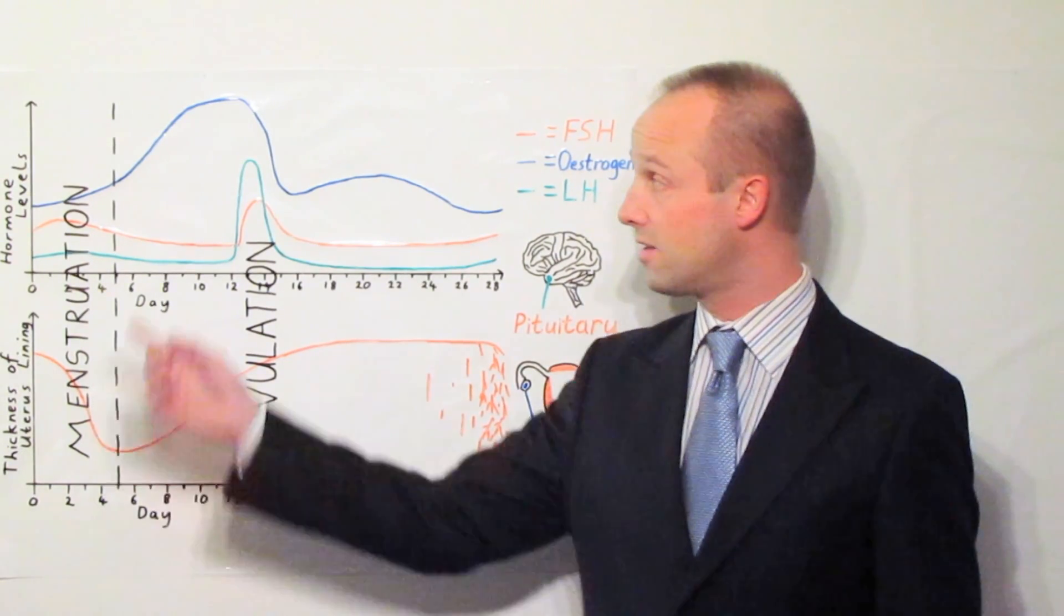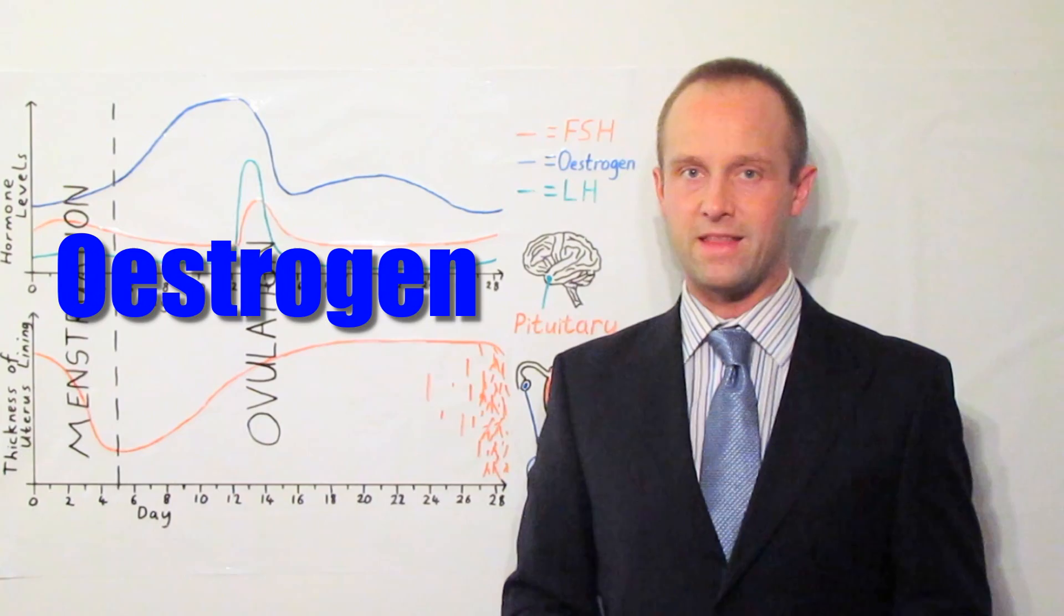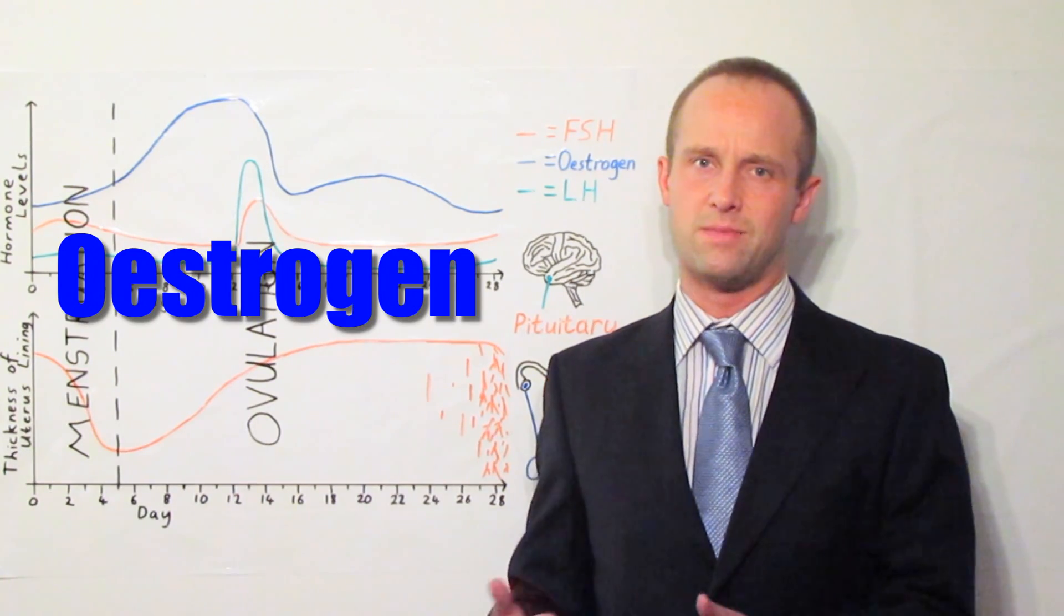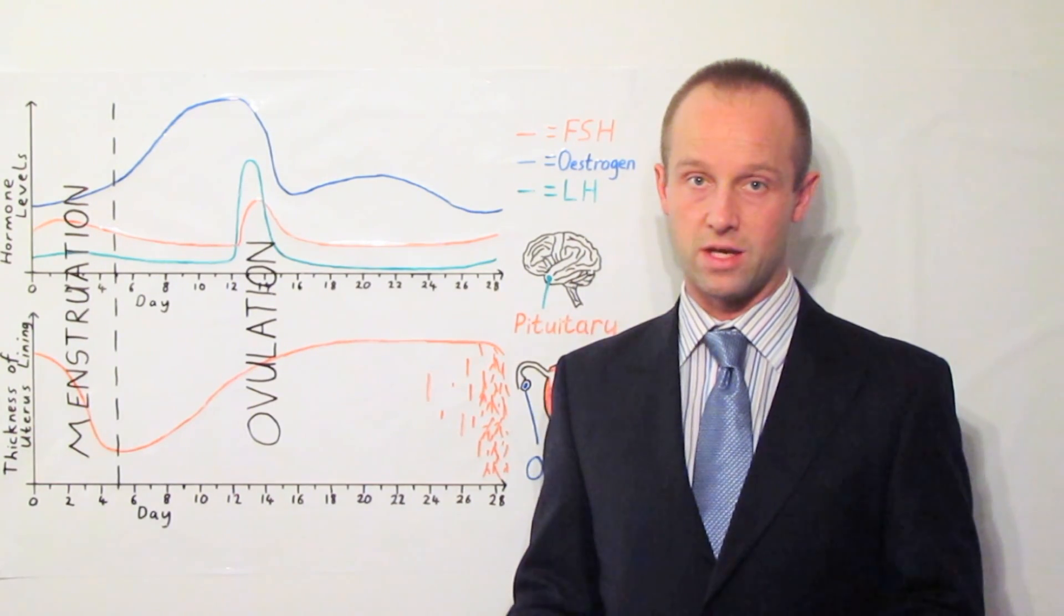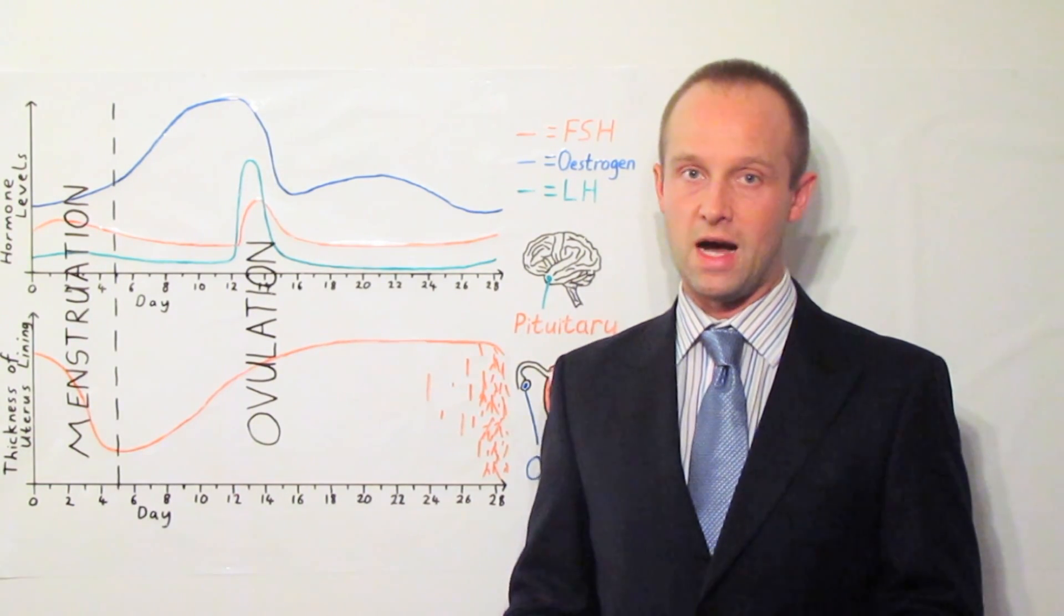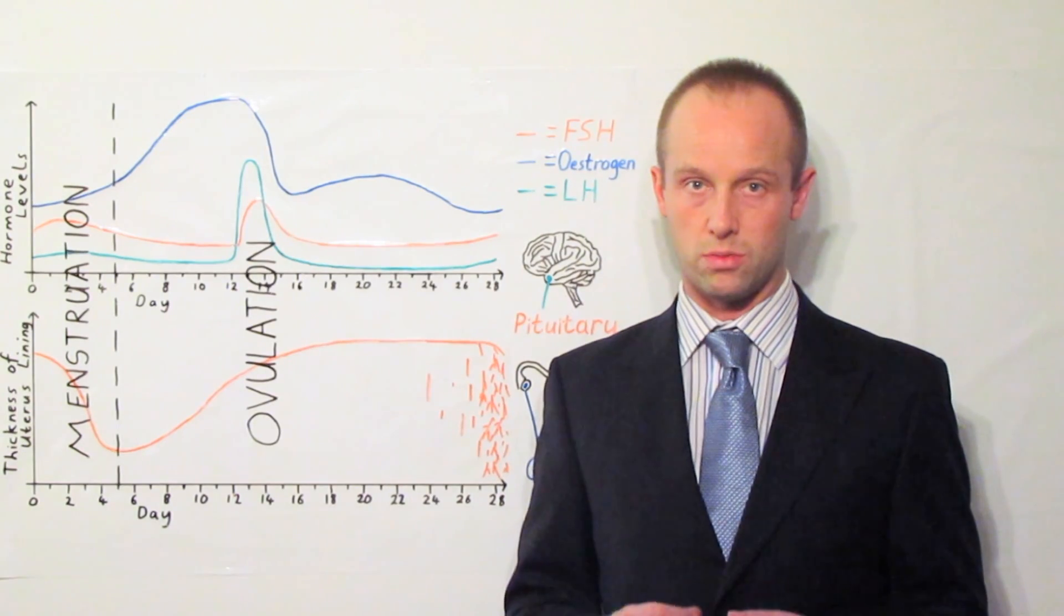Early versions of the pill contain large amounts of estrogen and that tended to make women nauseous, tended to make them ill, there were complications with things like gallstones. So more modern ones contain much lower levels of estrogen and they also contain another hormone called progesterone.